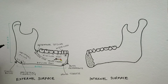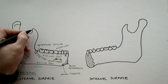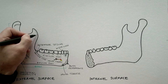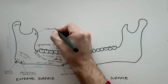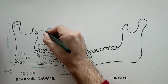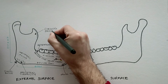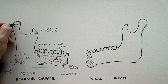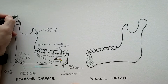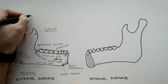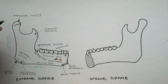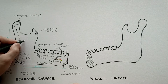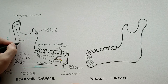The ramus of mandible is considerably thinner than the body and presents an anterior portion called the coronoid process, which receives the insertion of the temporalis muscle. Posterior to the coronoid process is the mandibular condyle, which articulates at the temporomandibular joint. Inferiorly, the mandibular condyle continues with the condylar neck.